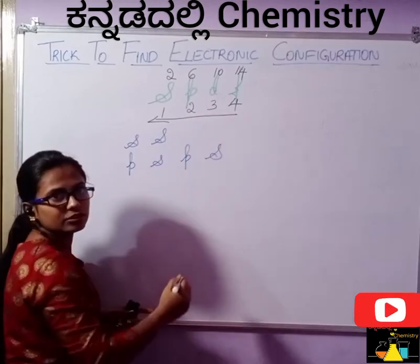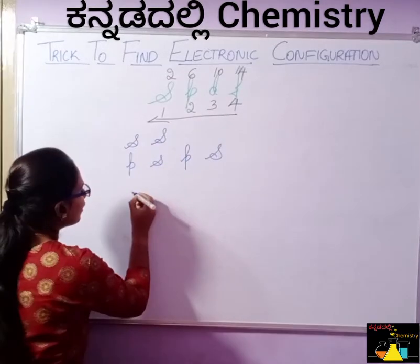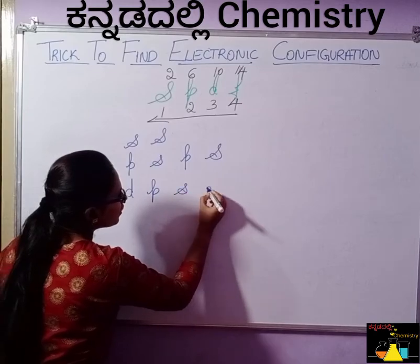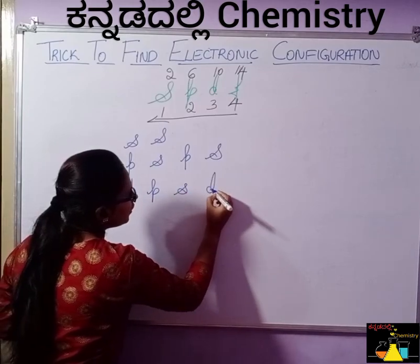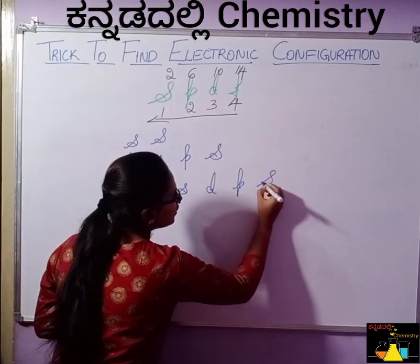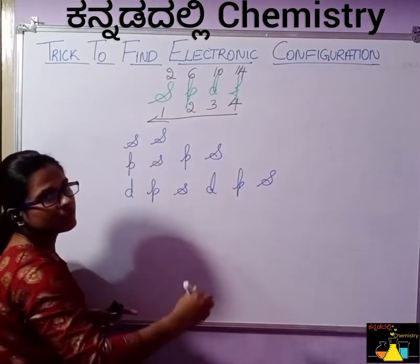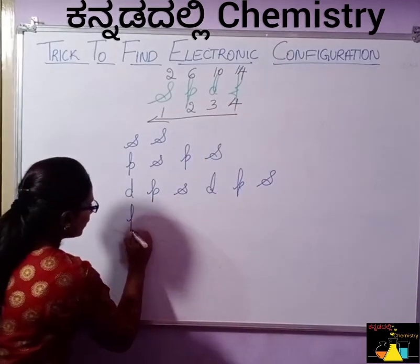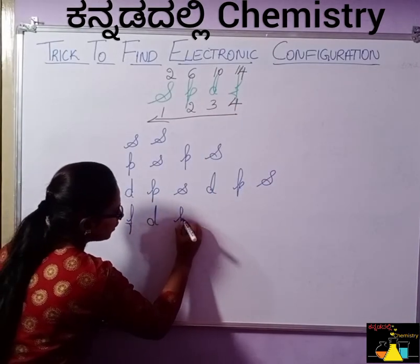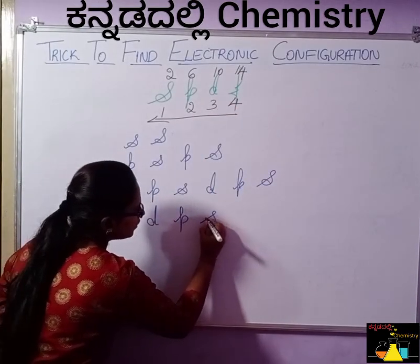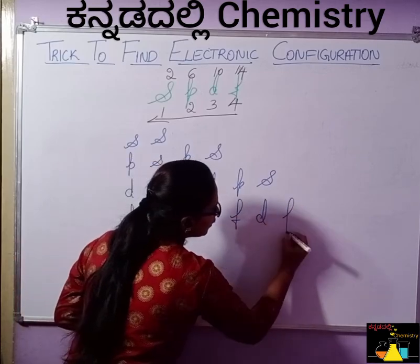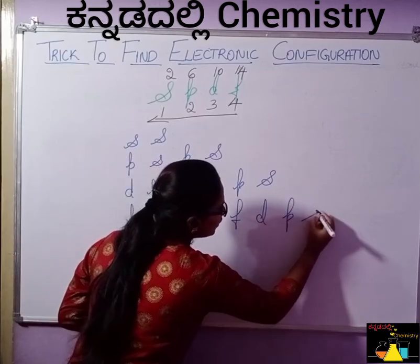Next third one is D, D, P — yes. Next one is F, F, D, P — yes. S is equal to A, S.